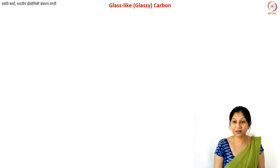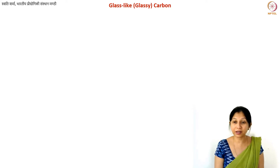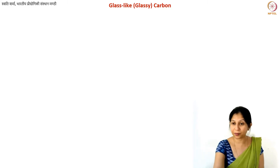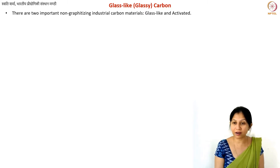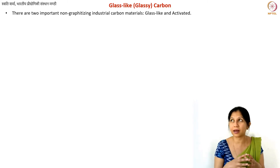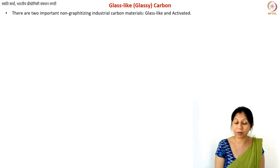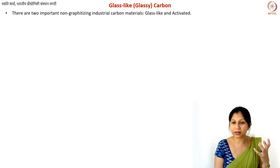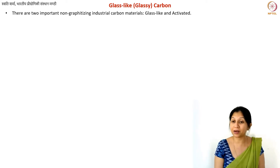Hello, everyone. In this lecture, we are going to discuss a very important non-graphitizing industrial carbon material, which is known as glass-like carbon or glassy carbon. When we talk about non-graphitizing carbon, one very important difference between graphitizing and non-graphitizing carbons is that these carbons have isotropic properties. Isotropic means the properties are the same in all directions.